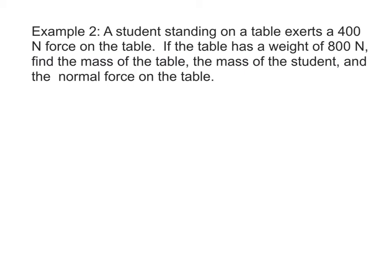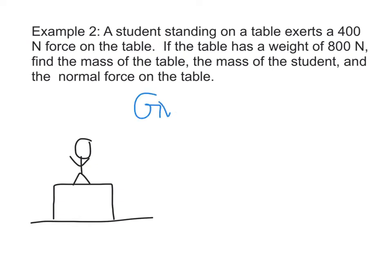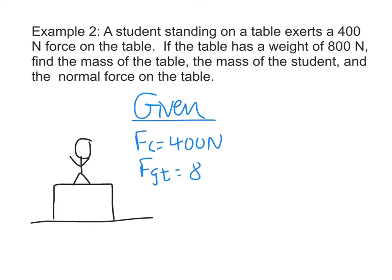The next example is the fourth problem on your handout. A student is standing on a table exerting a 400 N force on the table. The table has a weight of 800 N. Find the mass of the table, the mass of the student, and the normal force on the table. Given: contact force by the student on the table = 400 N; Fg for the table = 800 N. We're looking for mass of the table, mass of the student, and the normal force on the table.